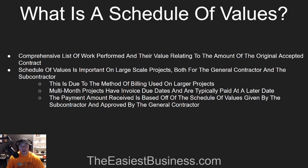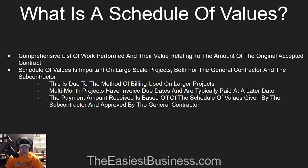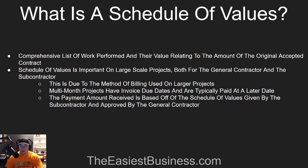The payment amount that's received is basically based off of the schedule of values given by the subcontractor and approved by the general contractor. So whatever percentage you've completed — let's say you've finished 20% of the work and you bill off your schedule of values to say you finished the walls and the trim, but still have the rest of the job — they'll pay you that 50% based on the schedule of values, whatever total that is, relative to the original contract amount.